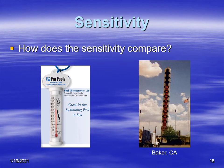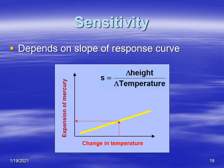Let's compare the sensitivity of two instruments. On the left you've got a pool thermometer — liquid and glass. On the right you've got the world's largest thermometer in Baker, California. Which one has the greatest sensitivity, meaning the biggest change in distance for a change in temperature? You'd probably be right if you said the one on the right, because you get a much bigger change in height with a change in temperature. That's what sensitivity is.